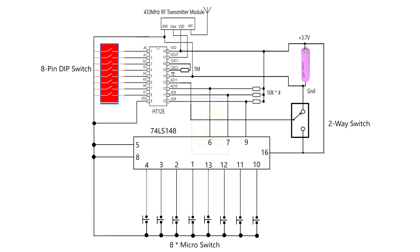You may wonder how we can control 14 devices with only 8 switches. With the help of the slide switch we can control 14 devices: when the slide switch is in one position we can control 7 devices, and when it is in the other position we can control another 7 devices — a total of 14 devices. The center pin of the slide switch is connected to the MSB of the HT12E encoder IC, and that bit is used for controlling the 74LS138 priority decoder IC in the receiver part.